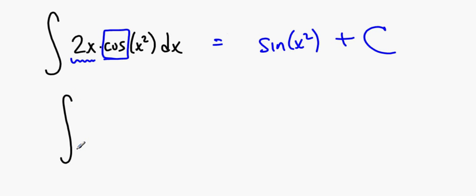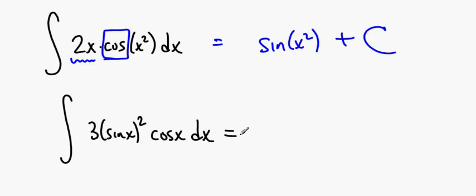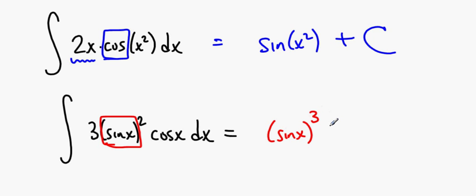What if I wanted the anti-derivative of 3 times sine squared of x times cosine x dx? Again, it's a product, and we don't really have a rule for dealing with products, but we sort of know that the anti-derivative of something squared involves something cubed. And so I start thinking: if that's the case, how do I check myself? The derivative of that is 3 times sin x squared, conveniently, times the derivative of the inside.